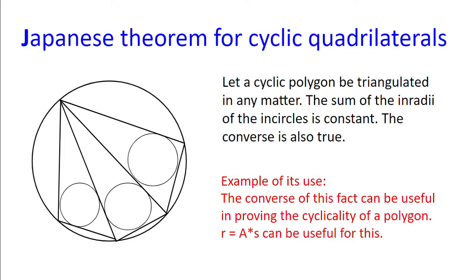Finally, we have the Japanese theorem for cyclic quadrilaterals. So let there be a cyclic polygon. And no matter how we triangulate it, the sum of the inradii of the incircles will always be a constant. We also know that the converse is true. And the converse of this fact could be very useful in proving the cyclicality of a polygon.